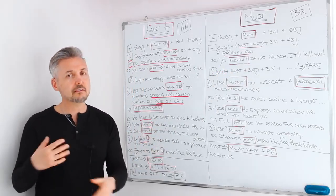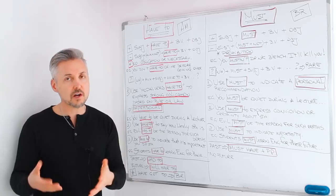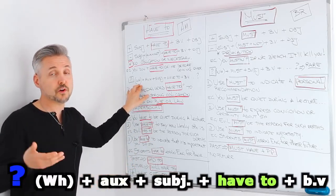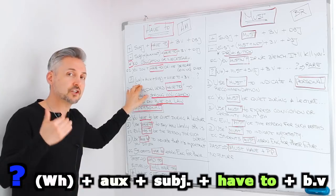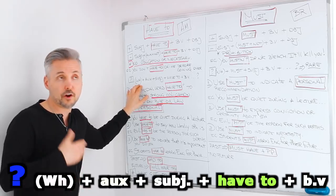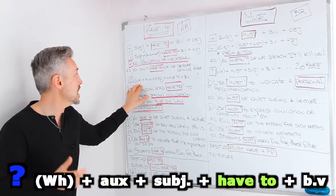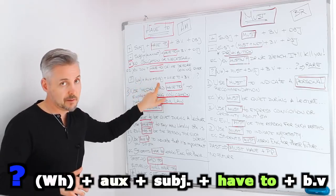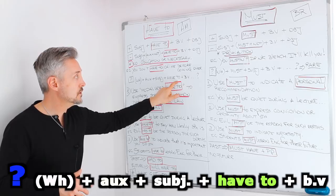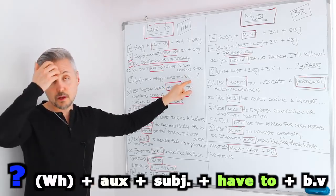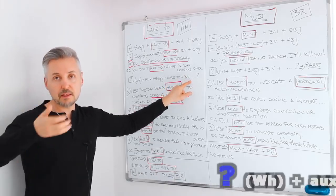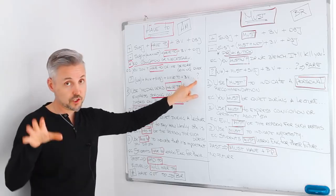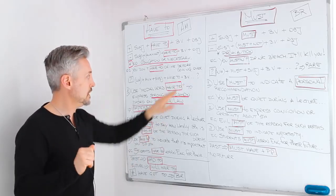Now let's go on with the interrogative sentence. We need a wh- question word, if any — where, who, how, what, etc. — then the auxiliary, then the subject, then 'have to,' then the base of the verb, and maybe the object or the time expression. It depends and will change. If you want to watch a lesson on making questions, you can click here.